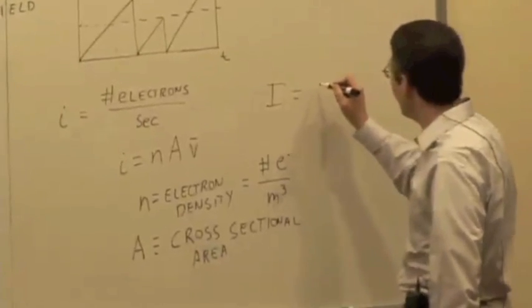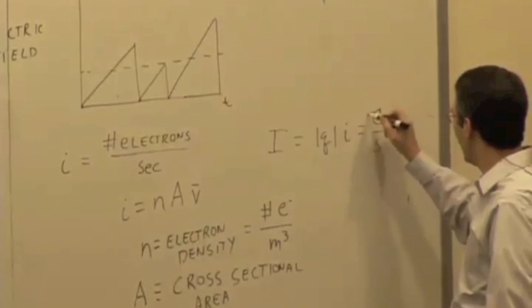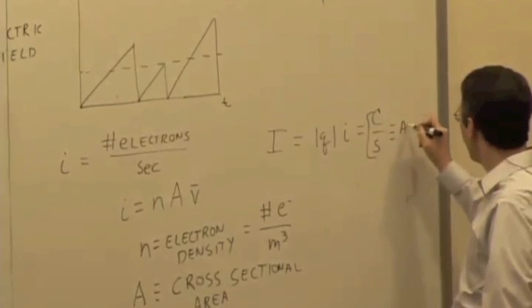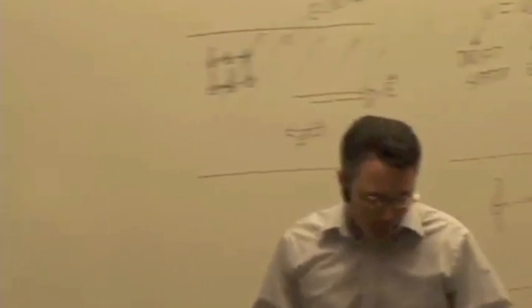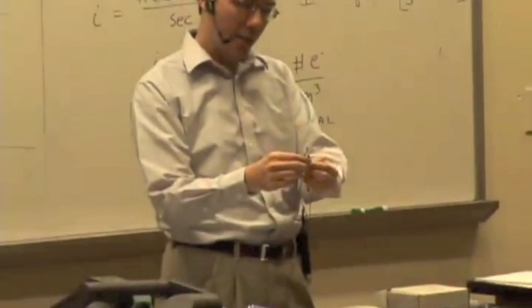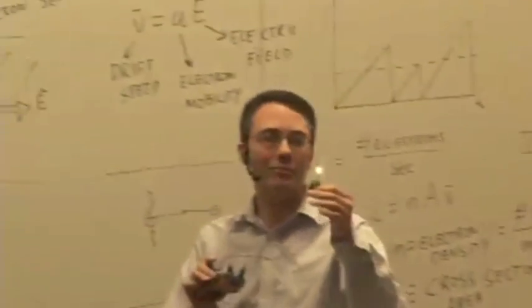Conventional current, capital I, is just the charge of the electron times the electron current — so this is coulombs per second, or amps. If we take a battery or two batteries in series and connect them to a light bulb, completing the circuit, the light bulb lights up. We have a current running through the light bulb, and by lighting up it demonstrates exactly the collisions we were talking about — electrons flowing through the filament, colliding with the ionic cores and giving off energy as heat and light.